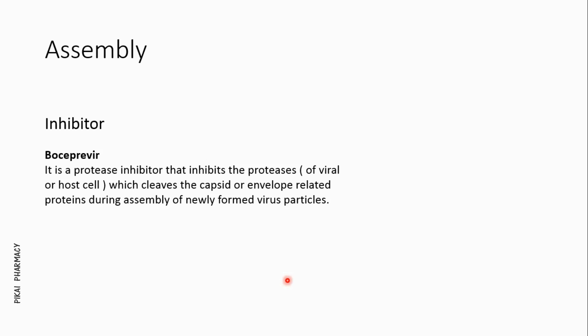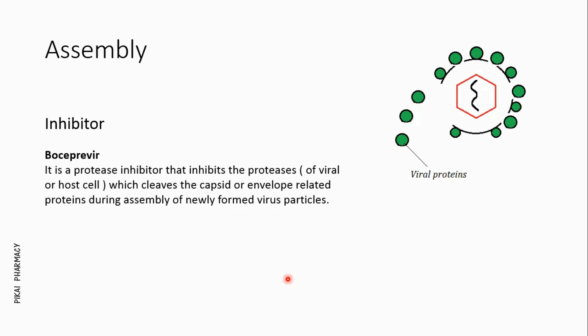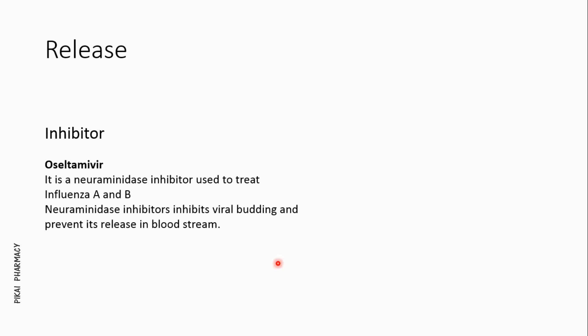After production of viral proteins, the virus assembles itself and becomes infectious. This step involves proteolytic cleavage of one or more capsid-related proteins or envelope-related proteins by protease enzymes, which can belong to the host cell or to the virus itself. Inhibitors target these proteases to prevent viral assembly. An example of such an inhibitor is boceprevir.